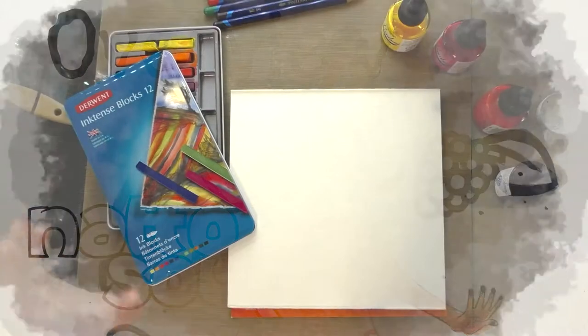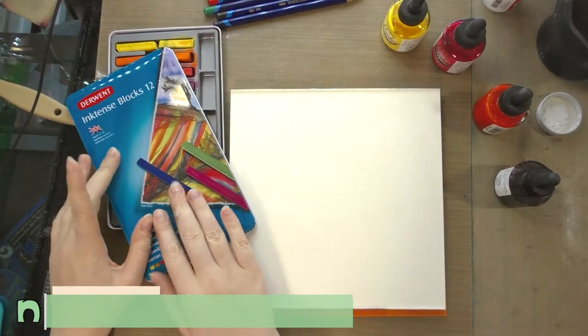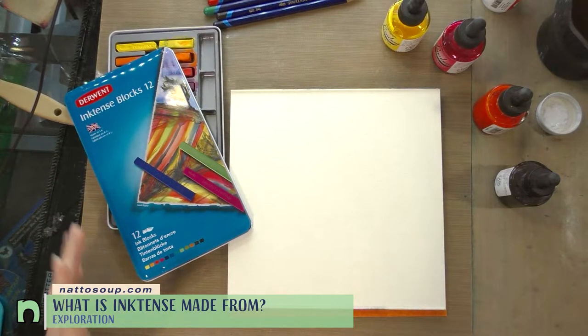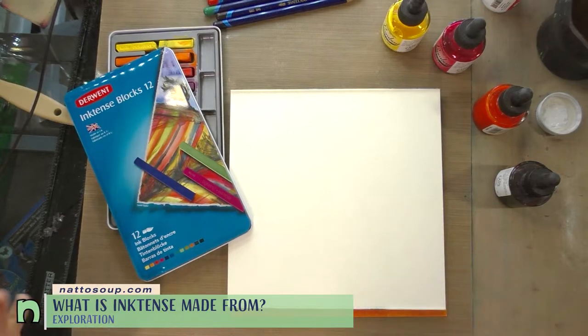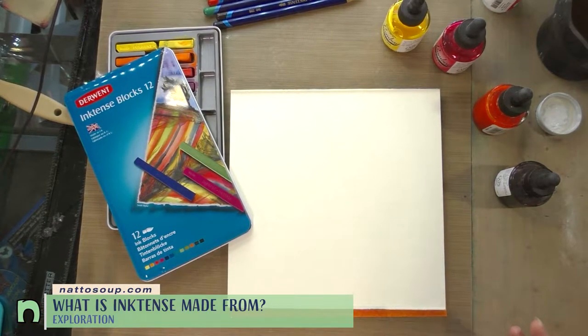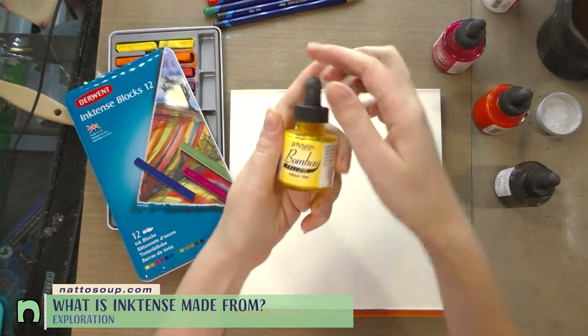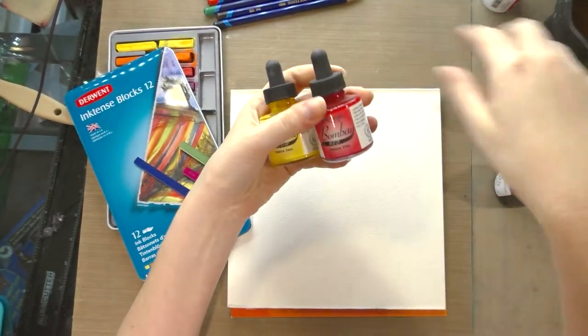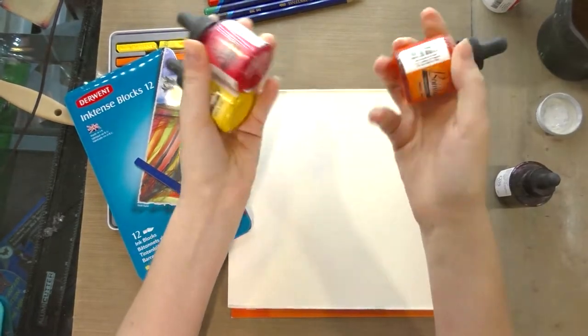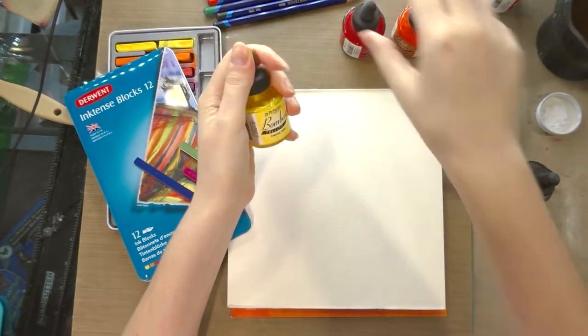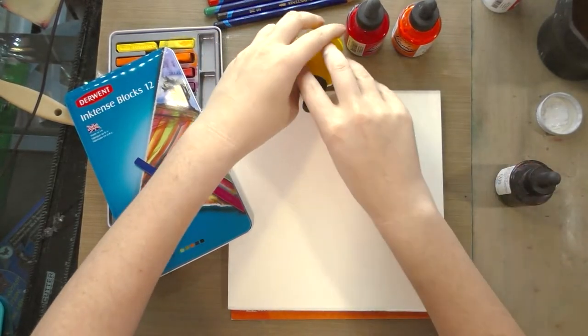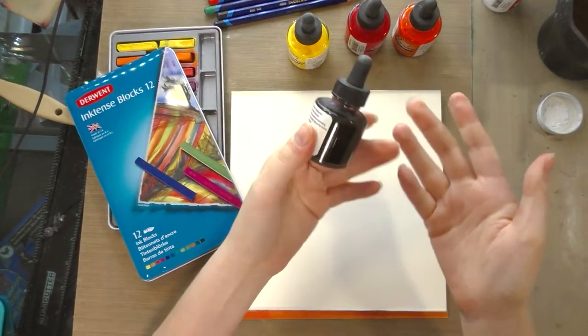Hey guys, in my other Inktense video I talked about how I think the Inktense products might have an India ink base since they retain their translucency over layers and they're indelible once dry. I pulled out some of my colored India inks - these are the PH Martin's Bombay inks. Pit pens are also India ink based, I may grab some of those later on, but I thought it would be really cool to do a comparison.